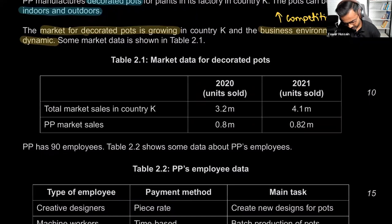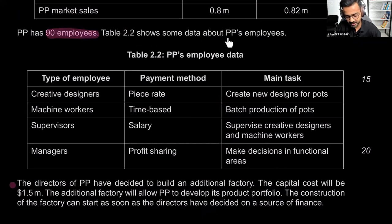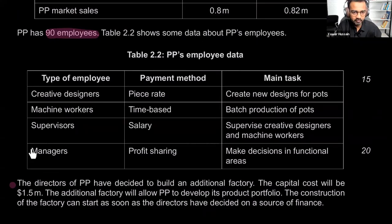Then we're given HR information related to Part D. PP has 90 employees. Table 2.2 shows data about PP's employees — four types: creative designers, machine workers, supervisors, and managers. They're all paid differently, which makes sense because each job type is very different. The payment method should be motivating and should match the main task of these employees.